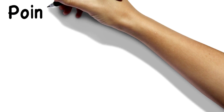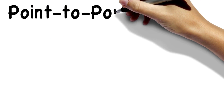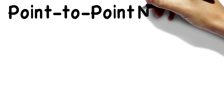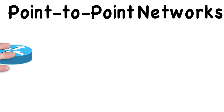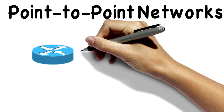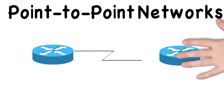In this video, we want to talk about three different types of WAN topologies, beginning with point-to-point networks. A point-to-point network is, as the name suggests, a network that goes from one point in the network to another point in the network. We're interconnecting two sites.